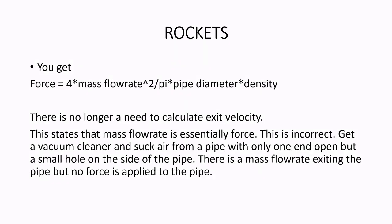After substitution, you get 4 times the mass flow rate squared divided by pi, pipe diameter squared and density.